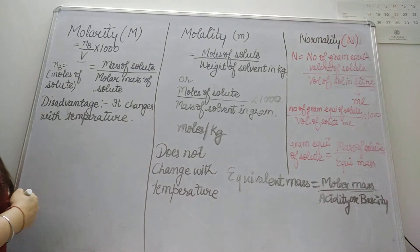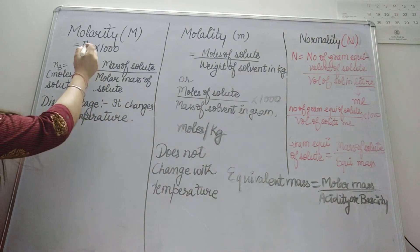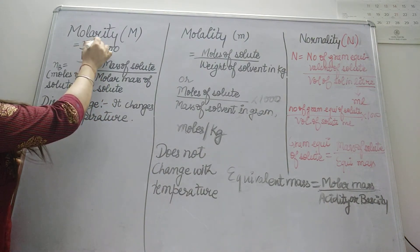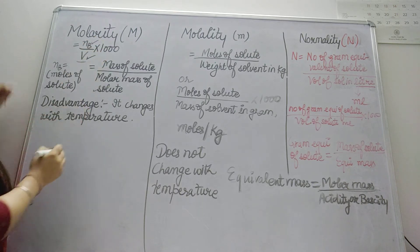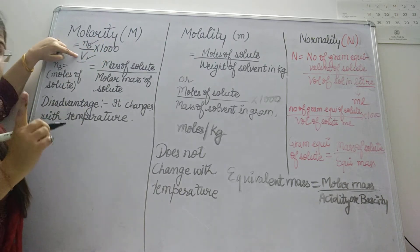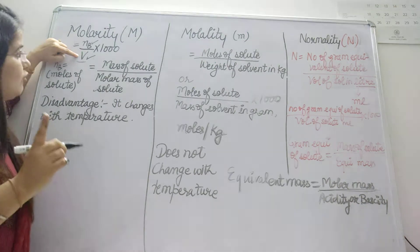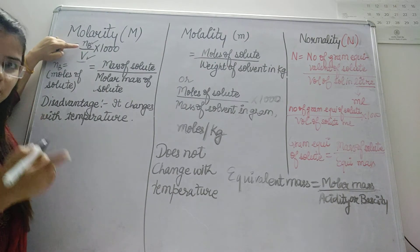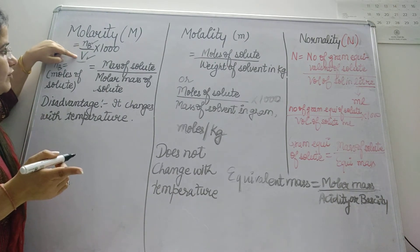So if you go with molarity first, what is the formula for molarity? It is the number of moles of solute dissolved per liter of solution.